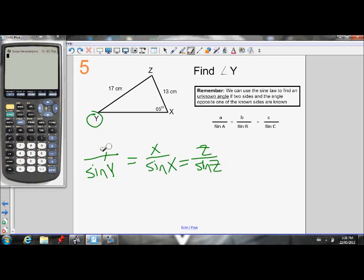So let's fill in what we know. I know the length of Y. I know the length of Y is 13. Side Y is opposite angle Y. I don't know angle Y, but the question asked me to find that, so I know I'm going to use that ratio.